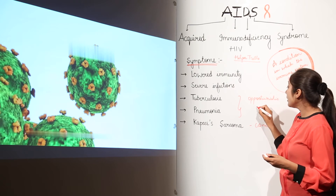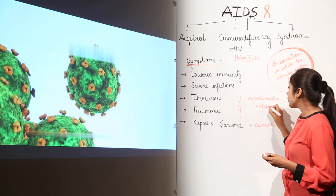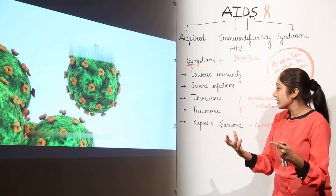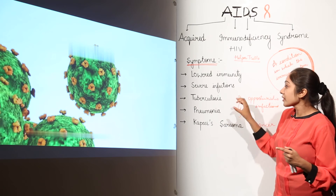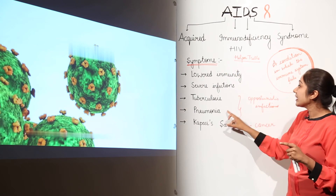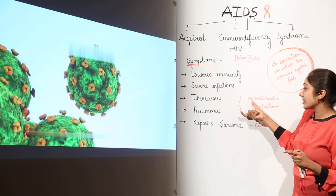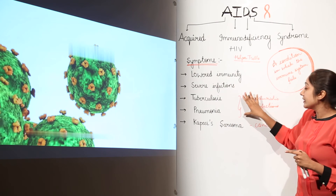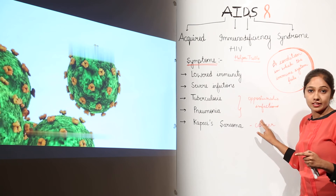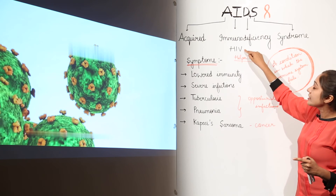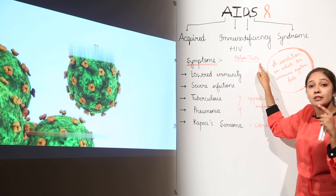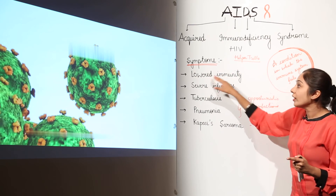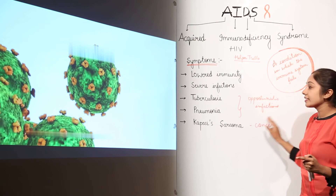When your immunity is lowered, other normal infections can also become severe. Tuberculosis and pneumonia can be symptoms because of this lowered immunity. Such infections which arise as a result of lowered immunity are known as opportunistic infections. HIV attacks the helper T cells, which are very important for defense. If they are attacked, you will have lowered immunity, severe infections, and many opportunistic infections.